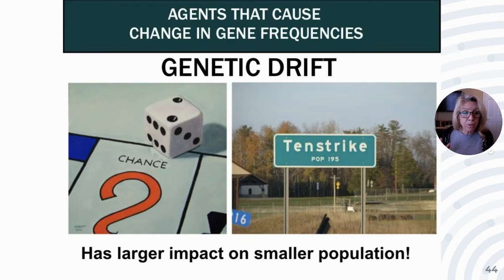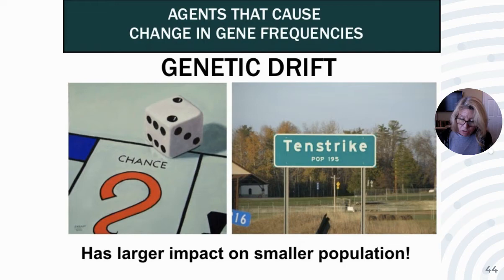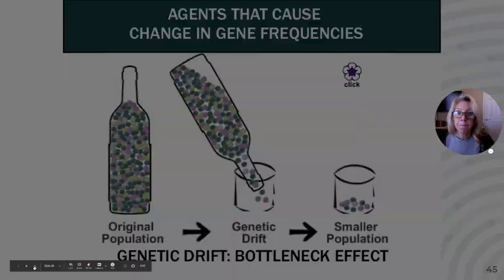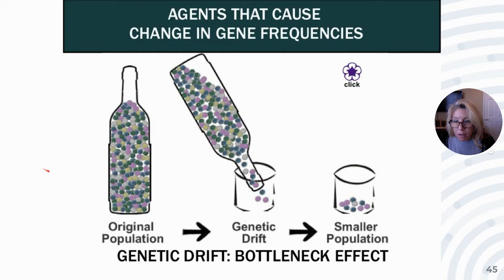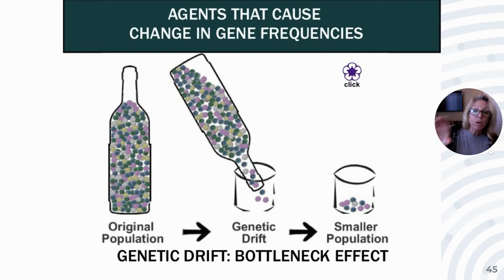Small populations can cause changes in allele frequencies because they are more susceptible to genetic drift — drifting in one direction or another due to chance. Genetic drift is defined as changes in the allele frequencies of a gene pool due to chance events. Smaller gene pools are more impacted by drift. One form is the bottleneck effect: imagine a bottle with five colors — purple, green, yellow, gray, and blue. If a crisis occurs and only a few get through, now instead of five colors you're down to three.